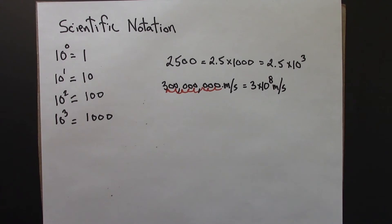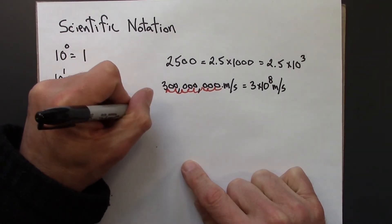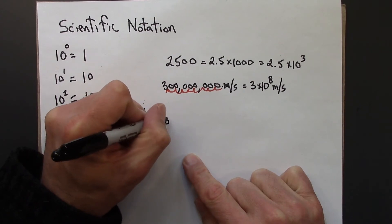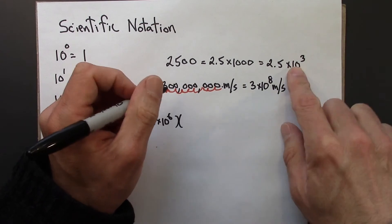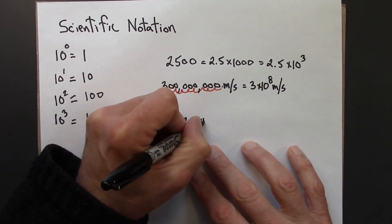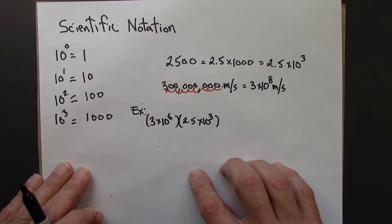And we can do arithmetic and multiplication with scientific notation. So let's do a quick example. So let's say we have 3 million. That's 3 times 10 to the 6. And for some reason, we need to multiply that by this number.